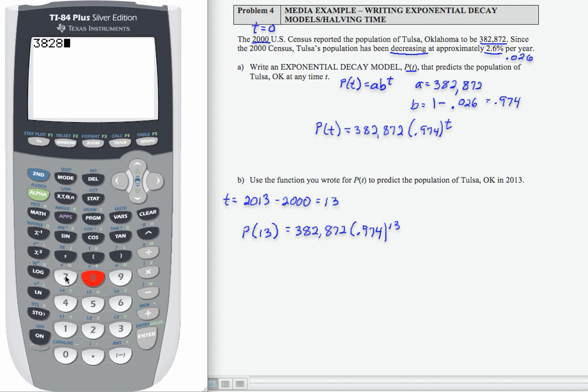382,872, parentheses, 0.974, close parentheses, and then exponent 13, then enter. And of course we want to round to the nearest whole person.